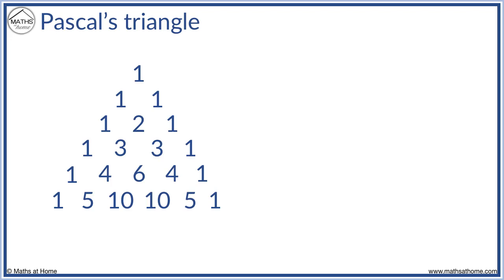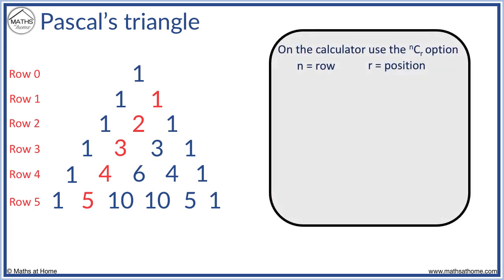We count the rows like so: row 0, row 1, row 2, row 3, row 4, row 5. This is because each number of the row is found one place in. We can also calculate these values if needed on a calculator using the nCr option, where n is the row number and r is the position.